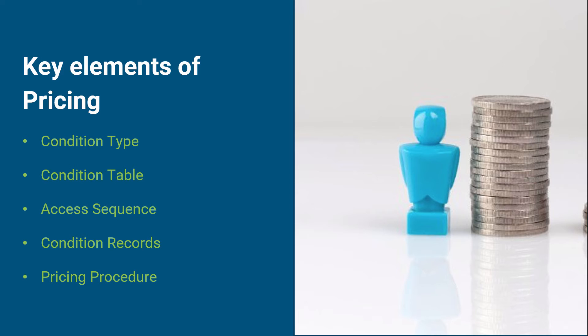Next is condition record. Condition records allow you to store and retrieve pricing data in the system. All the price elements of your daily business, for example, the price, the discount and surcharges for freight and taxes that you want to use for automatic pricing must be stored in the system as a condition record. You can define as many condition records as you want for different pricing elements for any validity period.